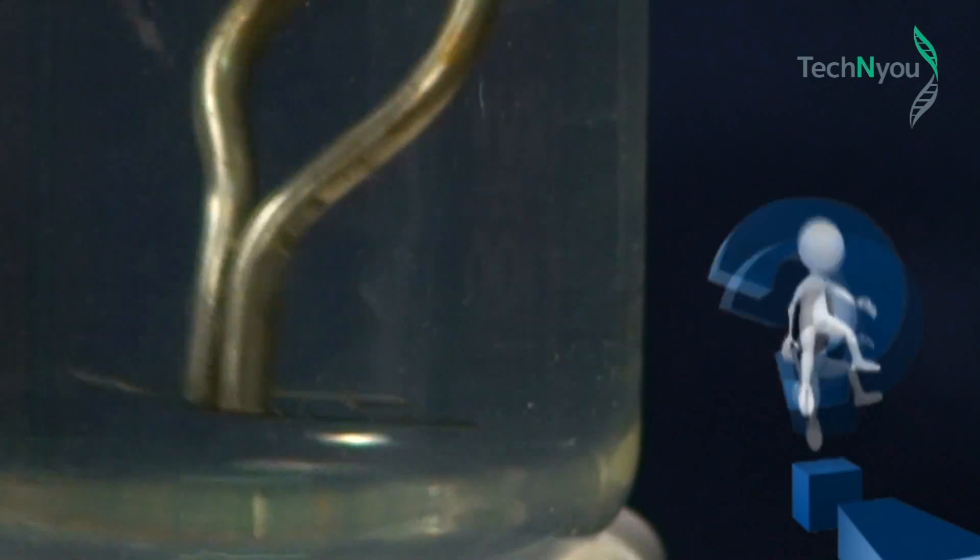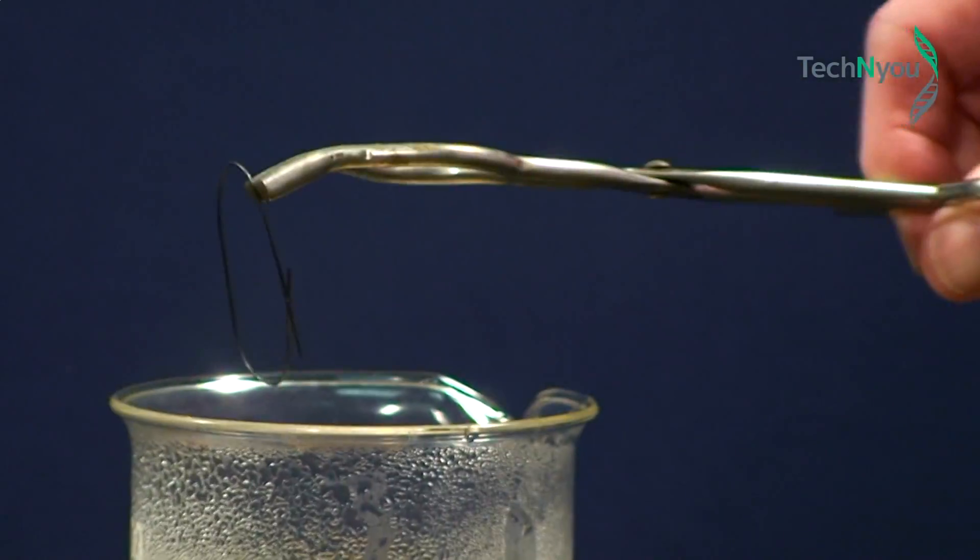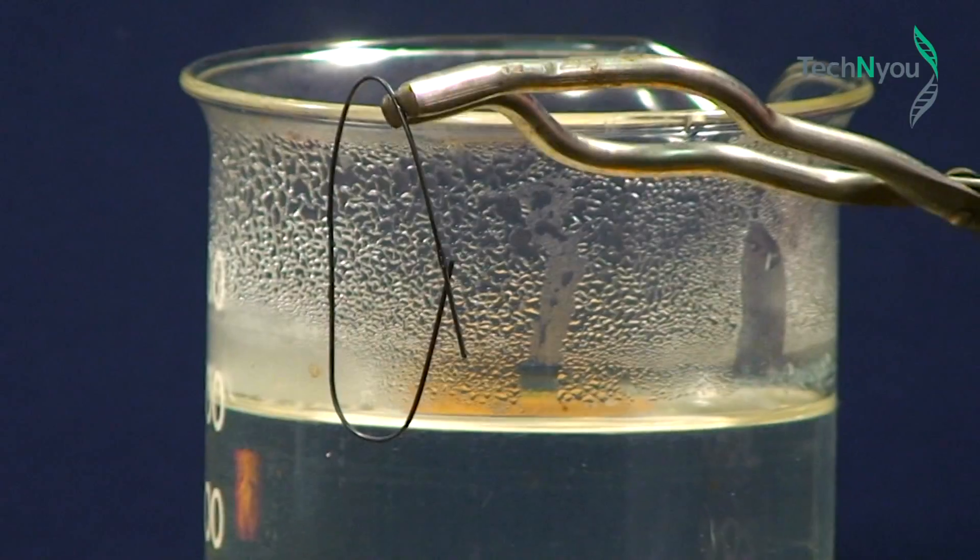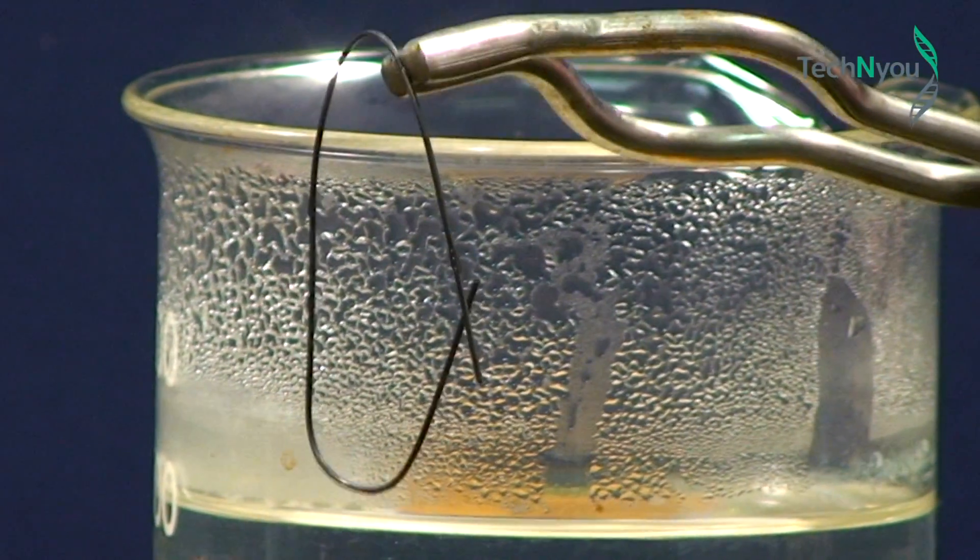Watch what happens now when we drop it into hot water. Look, we have our loop back. That's how easy it is. Our Nitinol wire has a new memory. From here on, it's a loop.